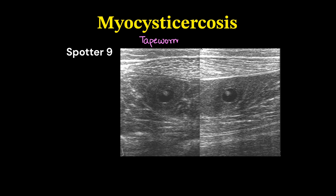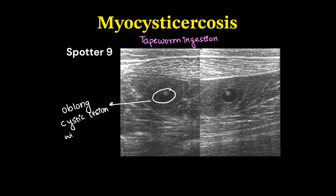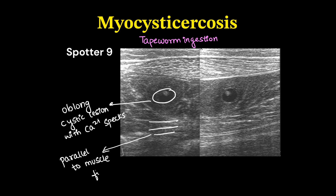This is an ultrasound image of myocysticercosis, happening due to tapeworm ingestion. We can see oblong cystic lesions with a calcium speck. These lesions will usually be parallel to muscle fibers, and the calcified speck is the dead larvae. This is also called rice grain calcification.